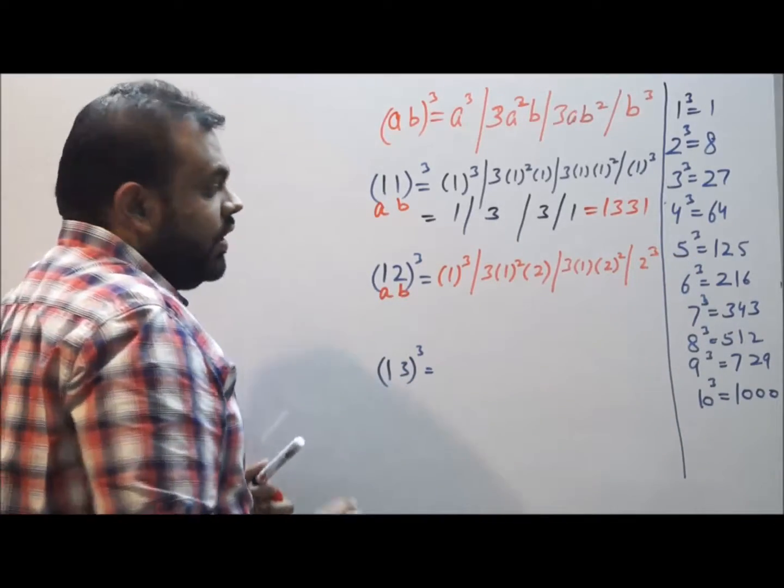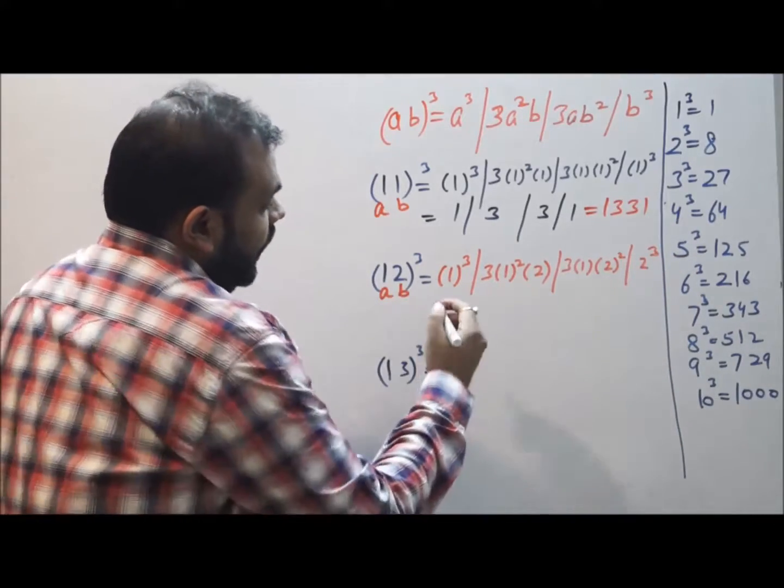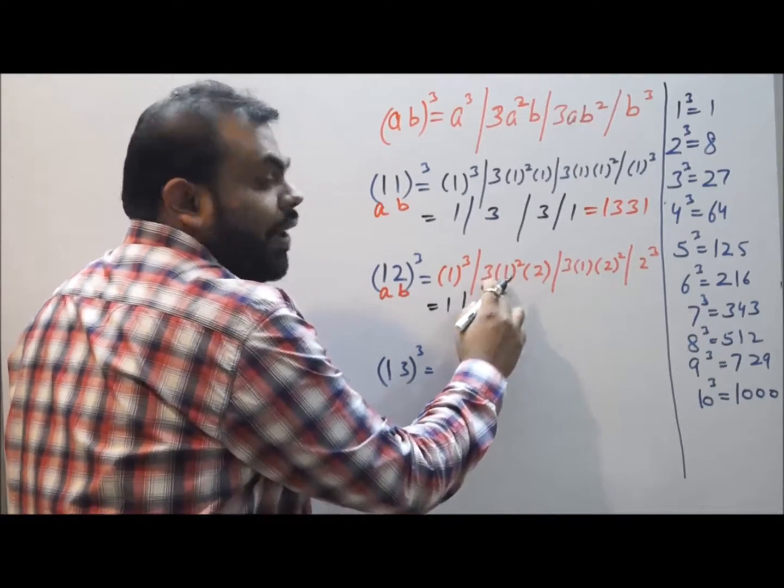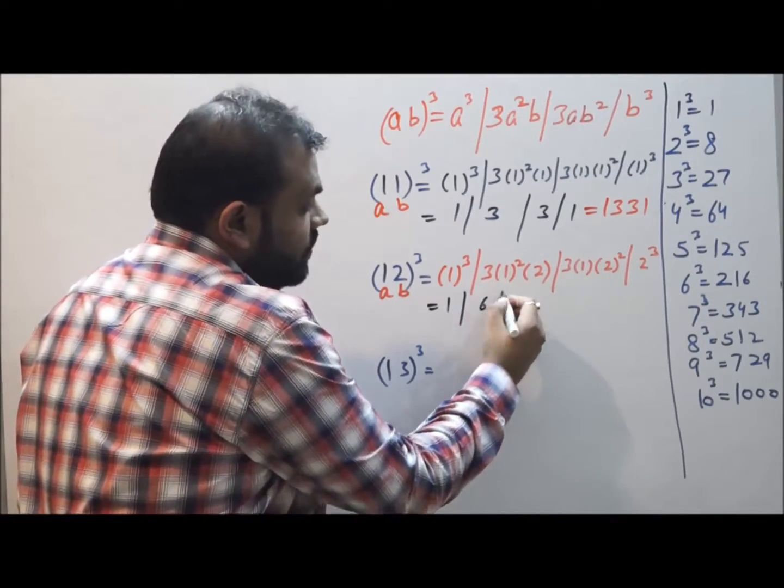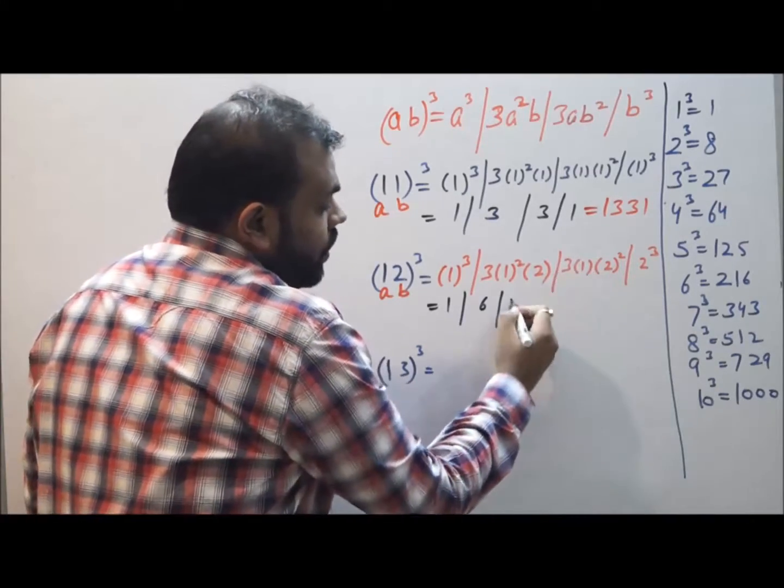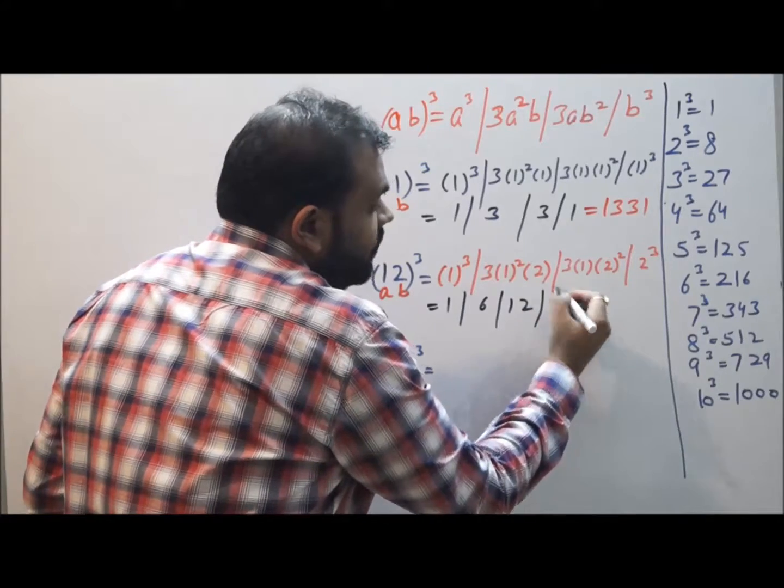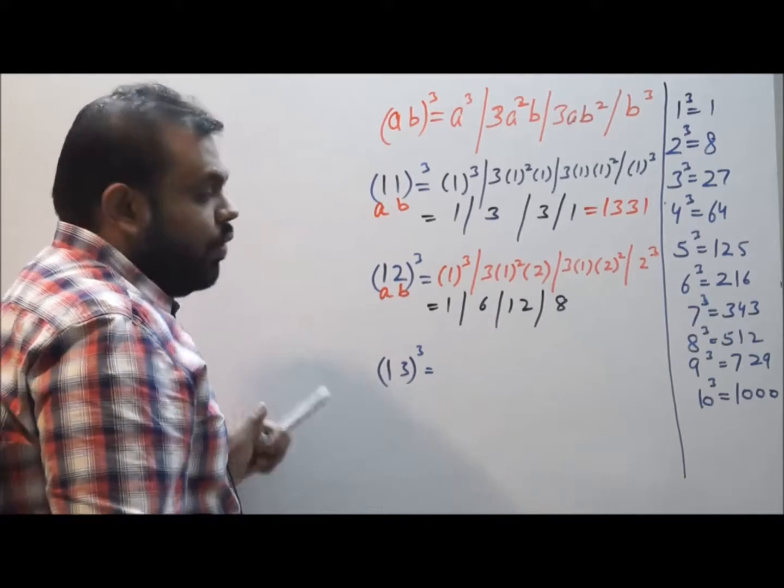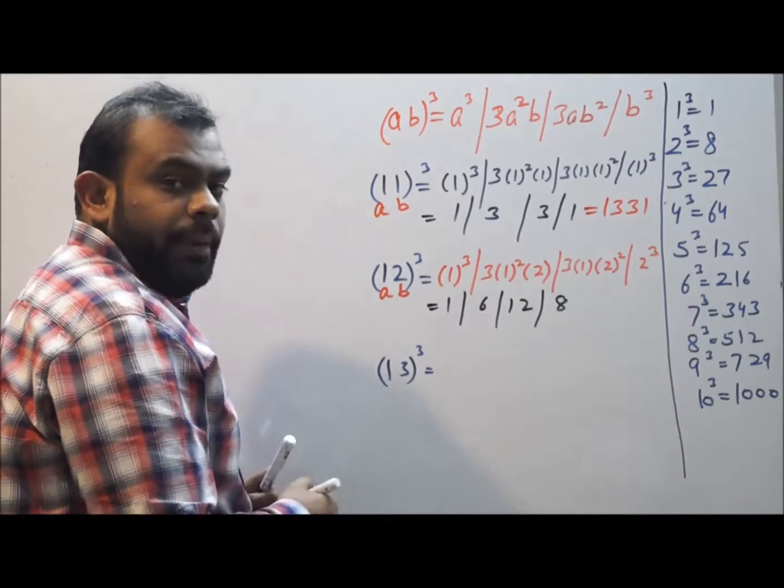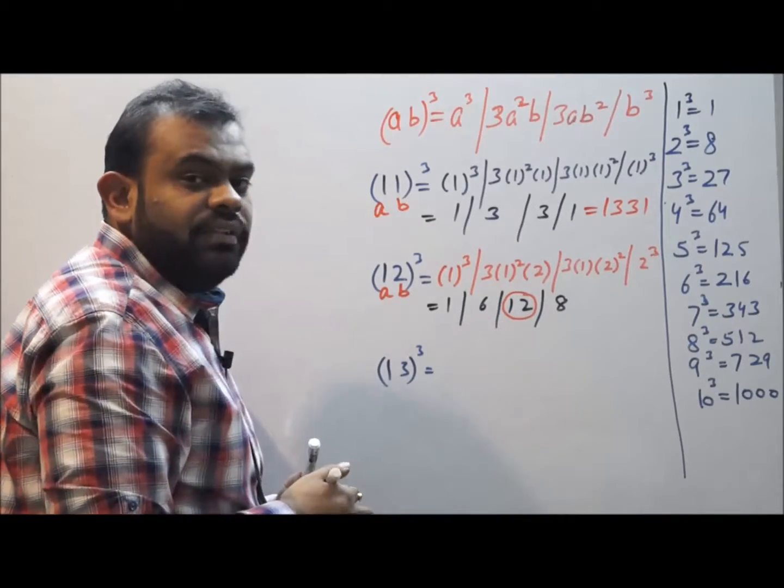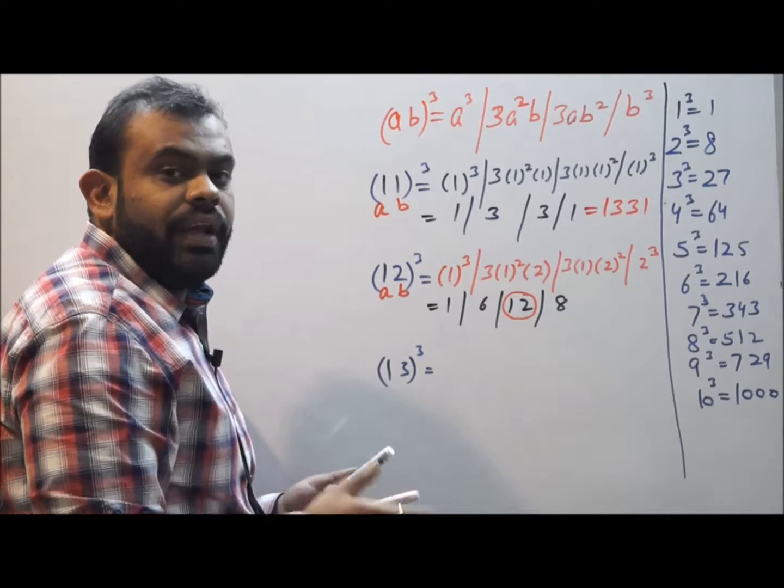If I solve these, I will be getting 1³ is 1, 3 × 1² × 2 is 6, 3 × 1 × 4 is 12, and the cube of 2 is 8. Now over here, the point to be kept in mind is that for the very first time we are getting something which is greater than 10.